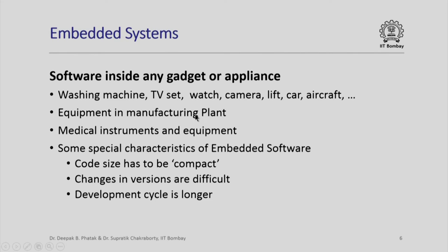Equipment in manufacturing plants is another example where you have embedded software. Medical instruments and equipment — in fact, practically every gadget today has some kind of computer inside it, and to make that computer work you need to write some application software. The special characteristic of embedded software is that the core size has to be compact, unlike programs which when compiled and linked with libraries often result in 2 or 4 million bytes of code, which is not appropriate for an embedded system where memory may be extremely limited. The code has to be written with very specific emphasis on its compactness.